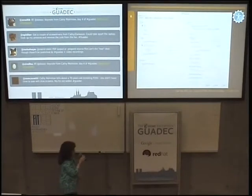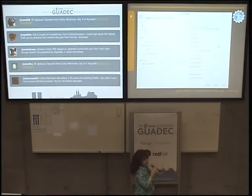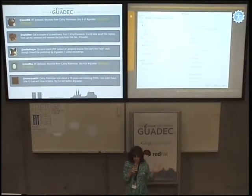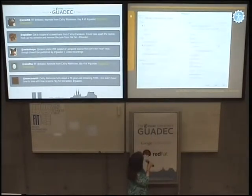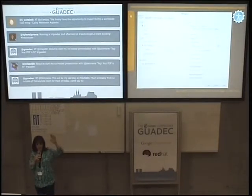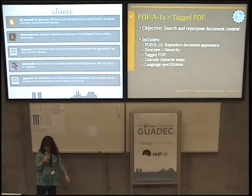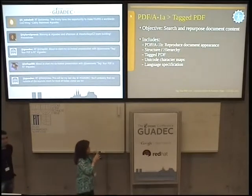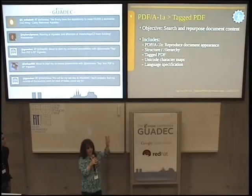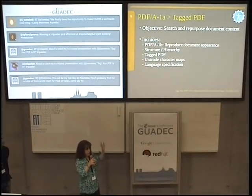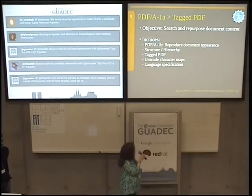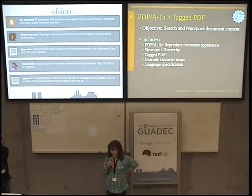Hopefully you can see the one little thing that's checked that says 'Tagged PDF' in the LibreOffice dialog. All you have to do is choose Export to PDF from the File menu, the dialog pops up, and you check 'Tag PDF.' Right above that checkbox there's PDF/A-1A. That standard is kind of like tagged PDF on steroids — its objective is searching and repurposing document content. Interestingly, 1A includes 1B rather than the other way around. 1B is about document appearance, and 1A adds structure and hierarchy — parent and child objects forming a tree — tagged PDF, Unicode character maps, and language specification.